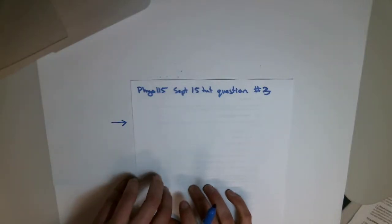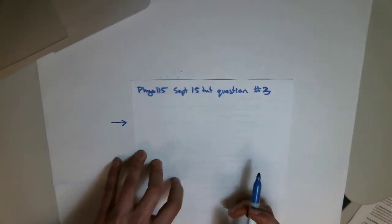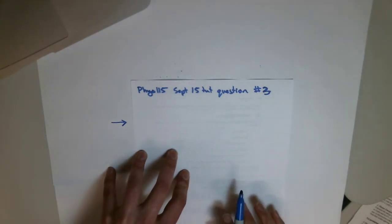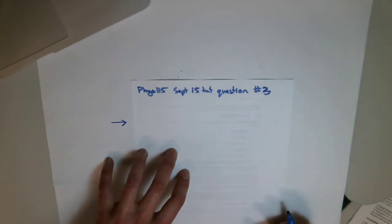Alright, another Physics 115 tutorial question. We skipped question 2, it's pretty simple, and we went on to question 3, which is energy density and an electric field. Very similar to what was in the assignment for this week.